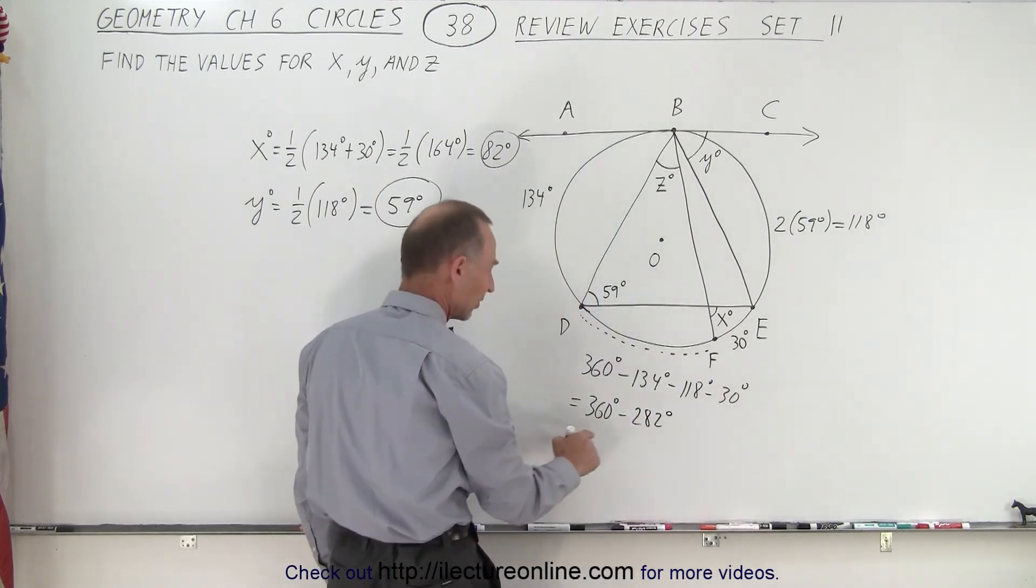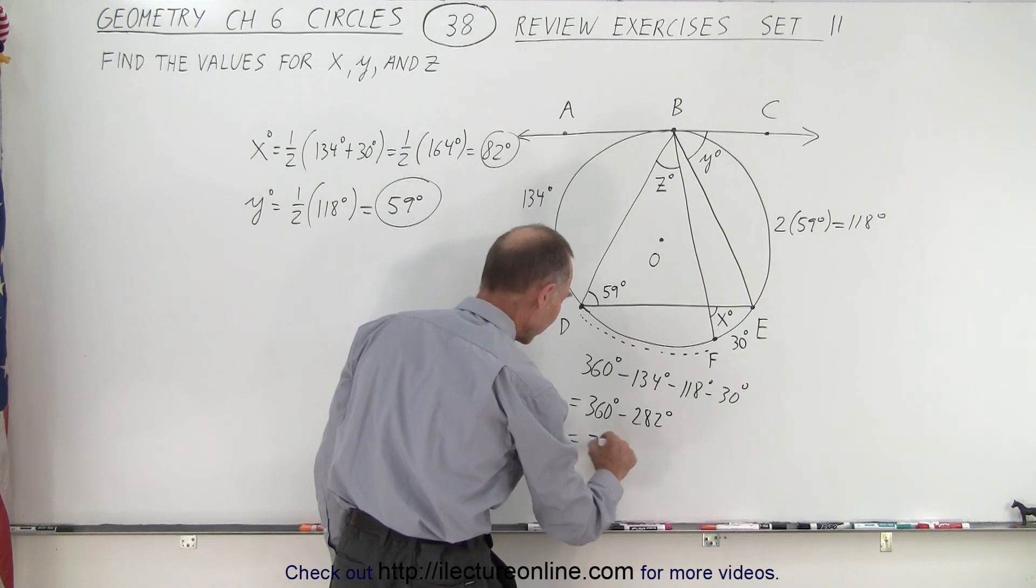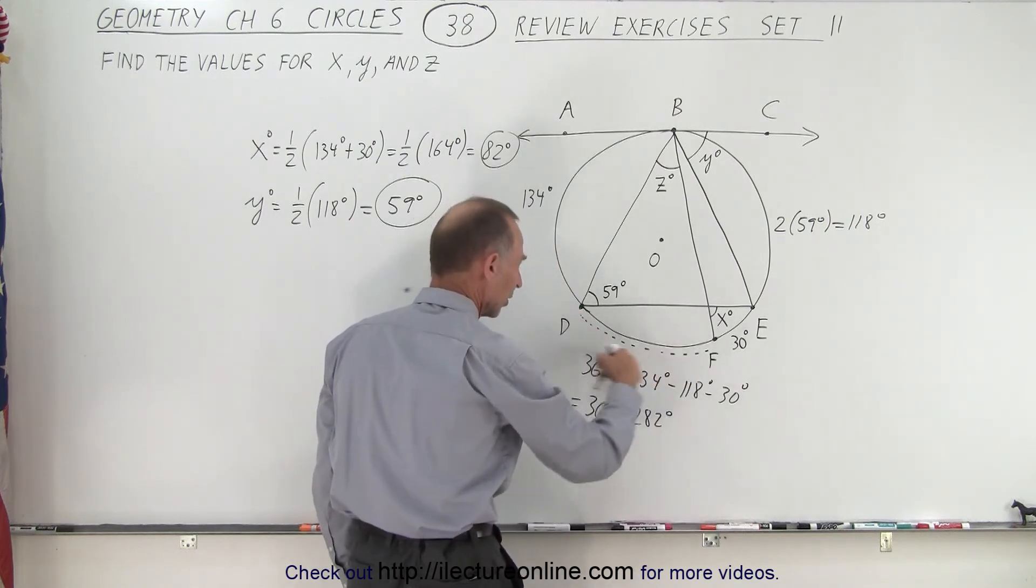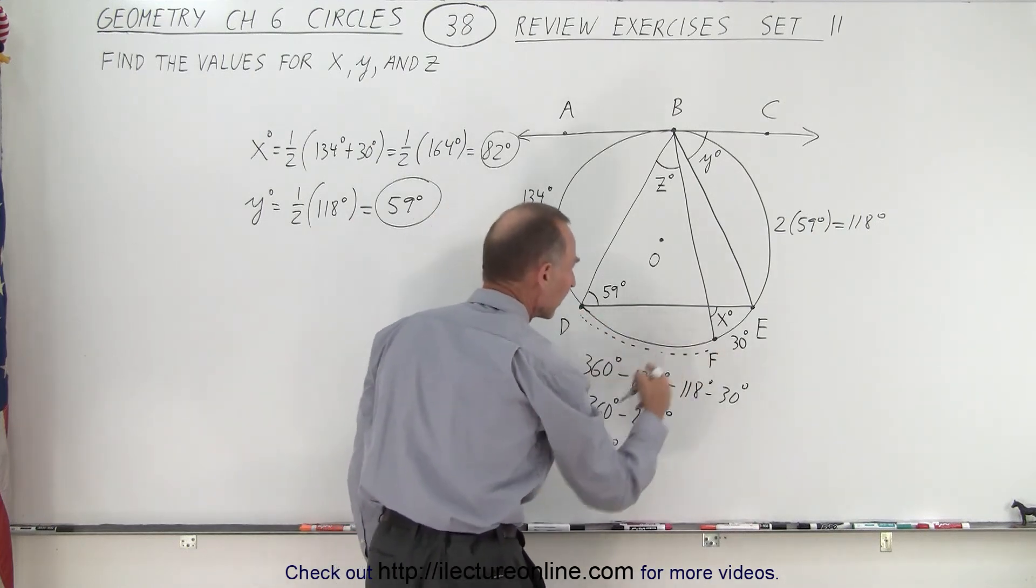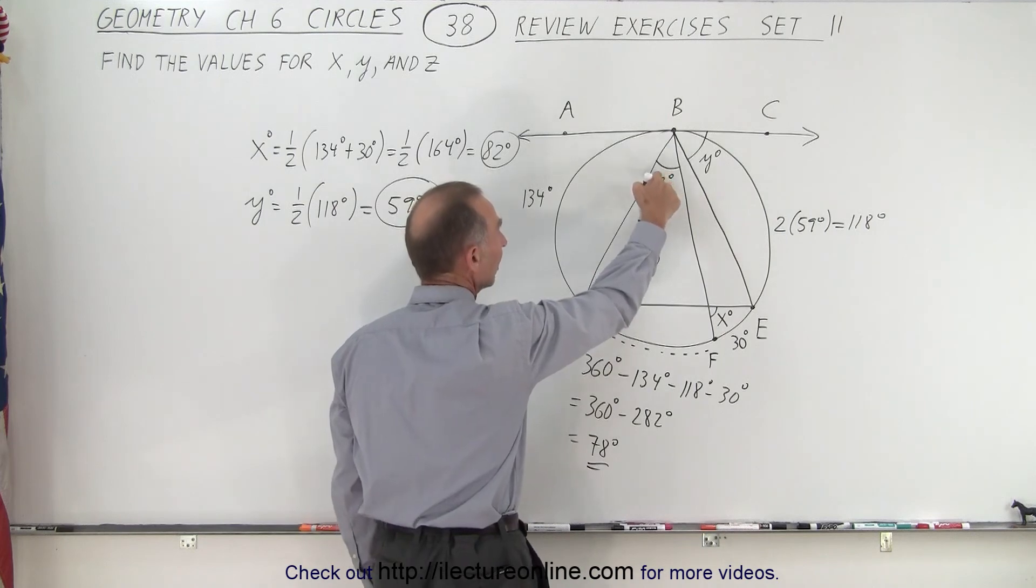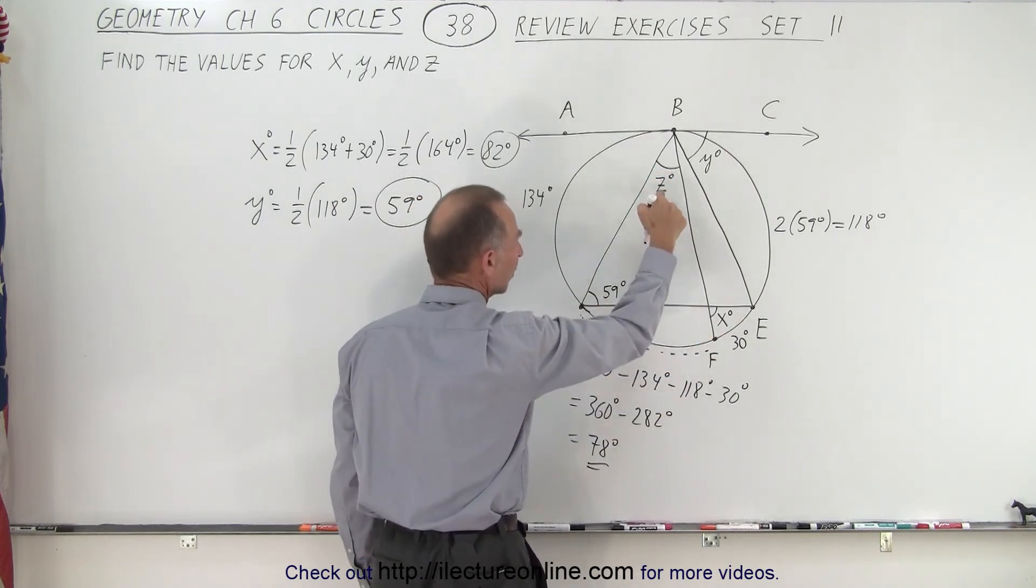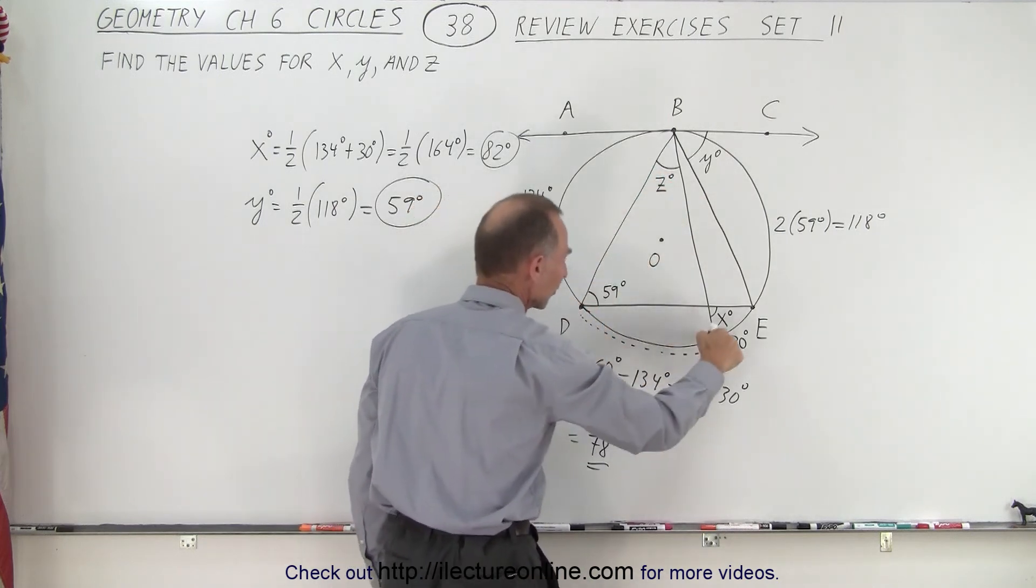So it's right from 360. That's 60 plus 18, which is 78 degrees. So that is the measure of this arc right here. And notice that z is opposite to that. We know, therefore, that z must be half the measure of that. So therefore,